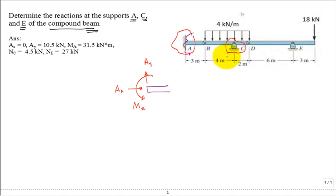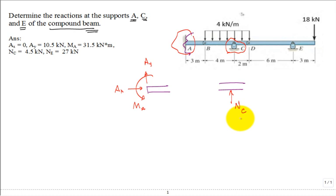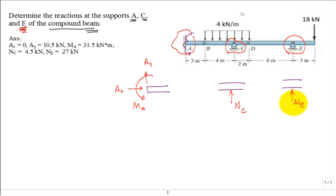Support C is a rocker. When we cut that part free, the beam sits on a support that only provides a normal force N_C — a rocker can't have any force in the plane it rocks on. Support E is also a rocker, so cutting free that section gives us just a normal force N_E.